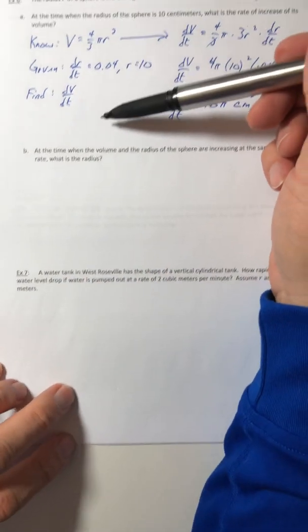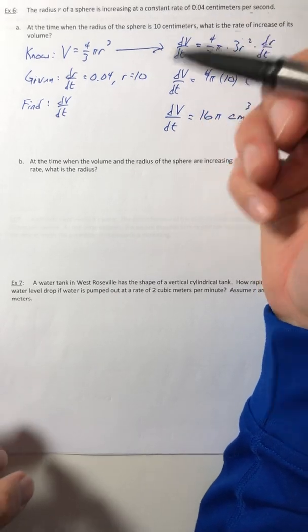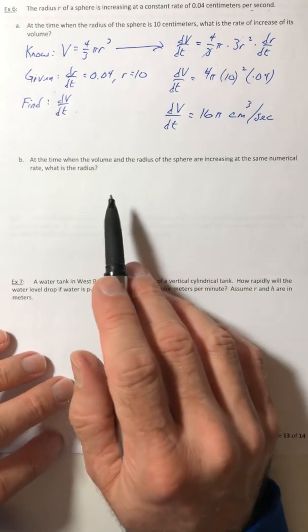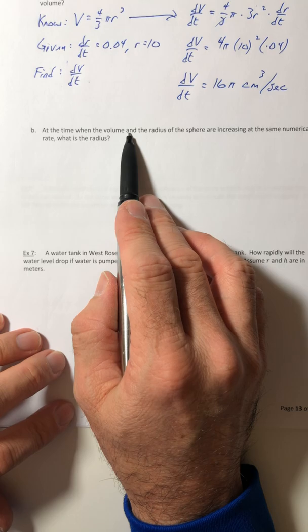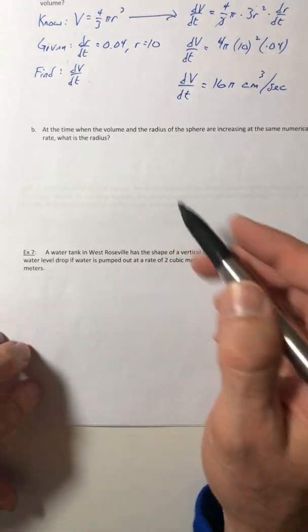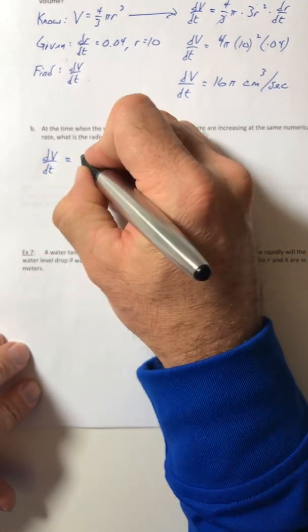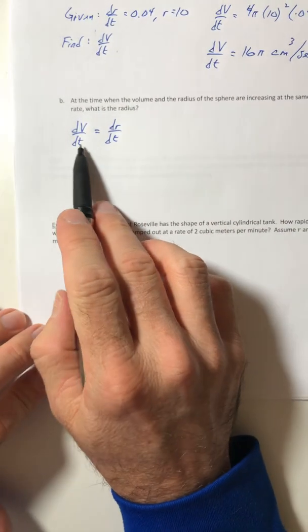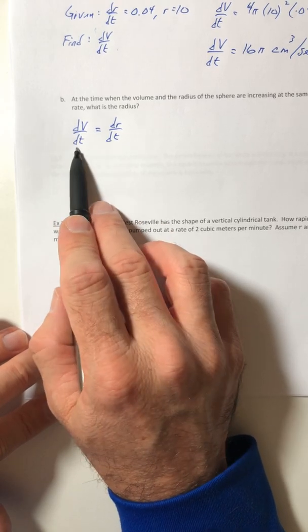So this one, you don't need to list out the no, the given, and the find. Because it's not really asking for finding a rate. It's what is the actual radius. So we just got to set up what they describe. The volume and the radius are increasing at the same rate. So their rates are supposed to be equal. They want to know when does this actually happen? When the volume and the radius are changing at the same rate.